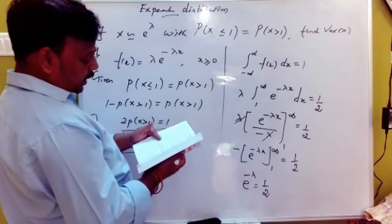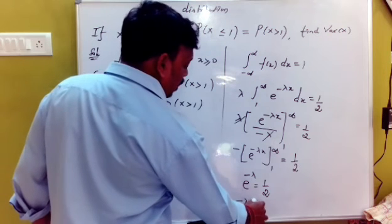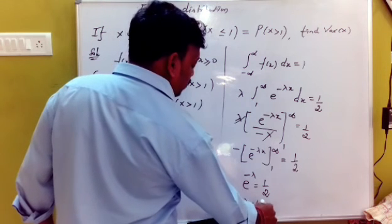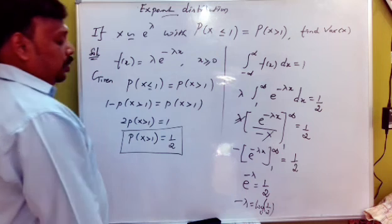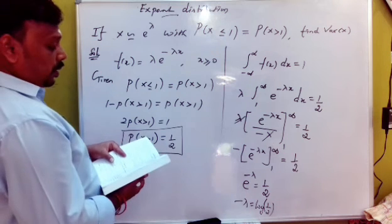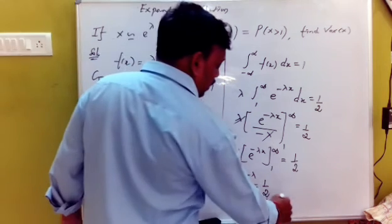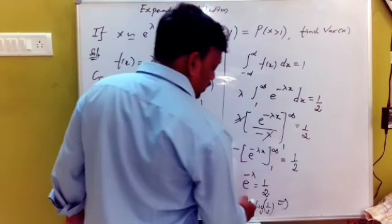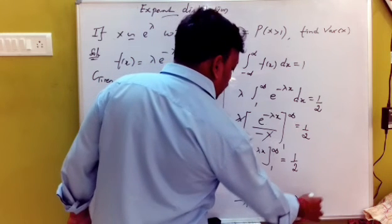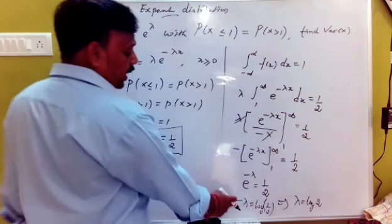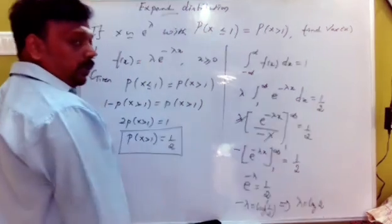So 1 to infinity equals 1 by 2. We calculate e to the power minus lambda x from 1 to infinity equals 1 by 2. Therefore e to the power minus lambda equals 1 by 2. Taking log: minus lambda equals log(1/2), so lambda equals log 2.